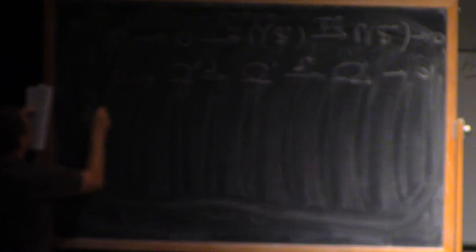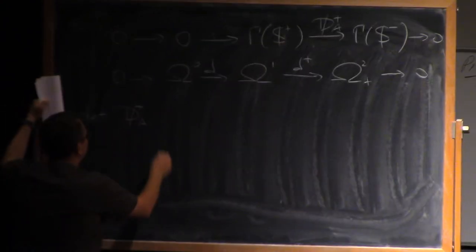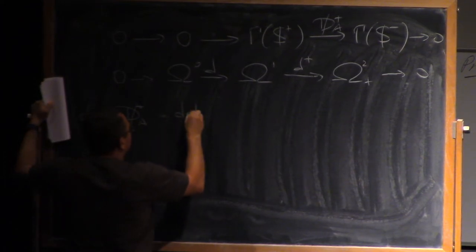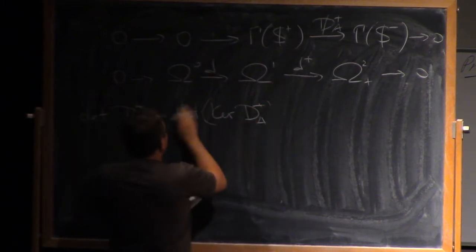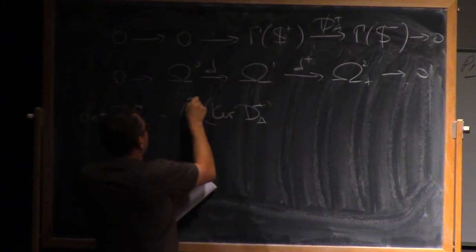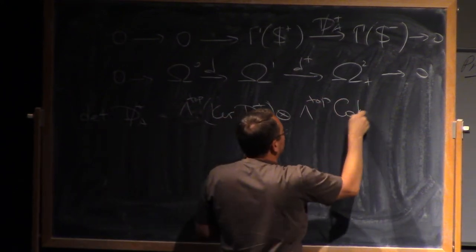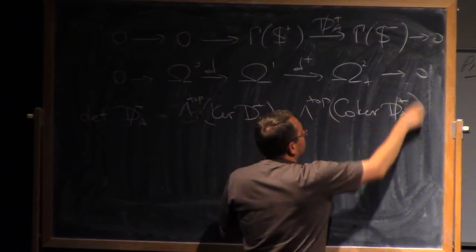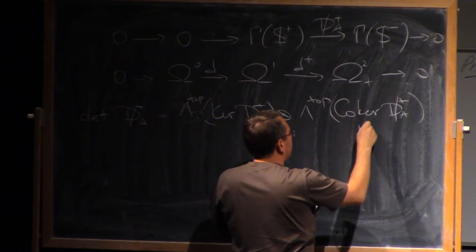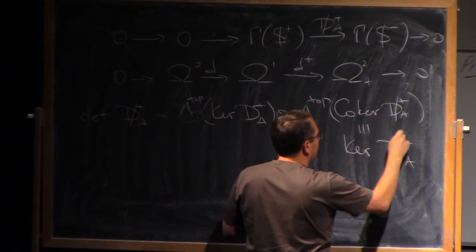Now, what you can easily see is that the determinant of dA plus, so what is that? This is the determinant of the kernel of dA plus, lambda top tensor, lambda top, the core kernel of dA plus. We can identify this with the kernel of dA minus.